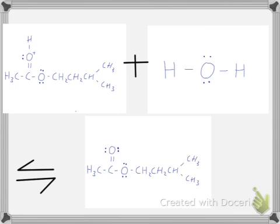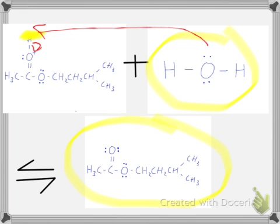So the last step to getting an ester is removing this hydrogen. The hydrogen will be lost by water. This water will pick up the hydrogen and the electron will go here. So the plus charge will be lost. And so the final product will be this ester.